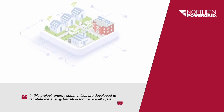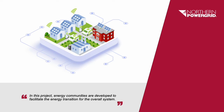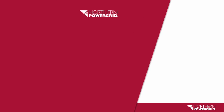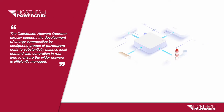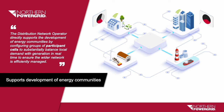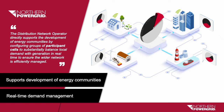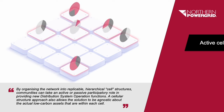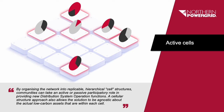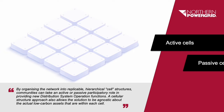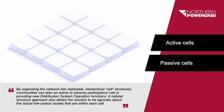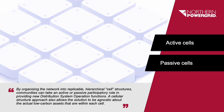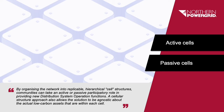In this project, energy communities are developed to facilitate the energy transition for the overall system. The distribution network operator directly supports the development of energy communities by configuring groups of participant cells to substantially balance local demand with generation in real-time, to ensure the wider network is efficiently managed. By organising the network into replicable hierarchical cell structures, communities can take an active or passive participatory role in providing new distribution system operation functions. A cellular structure approach also allows the solution to be agnostic about the actual low-carbon assets that are within each cell.